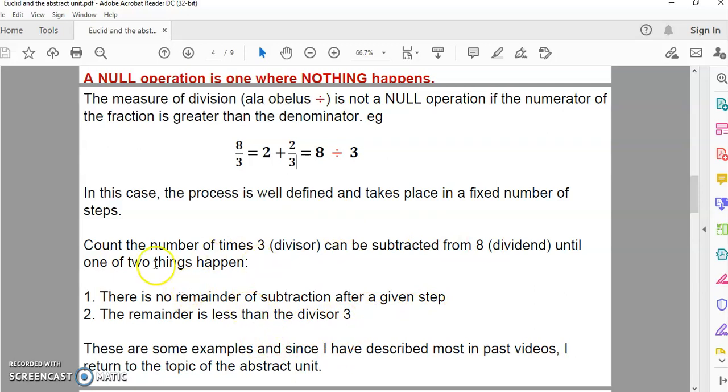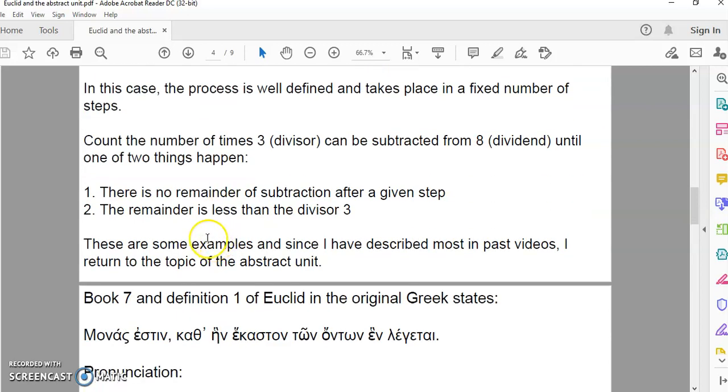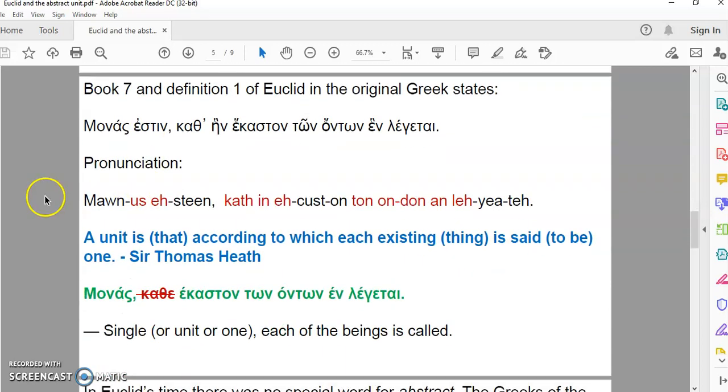The fools in mainstream academia, when they say that one divided by three is 0.333 dot dot dot, don't know what they're talking about. They don't understand measure, they don't understand radic systems. They are clueless and deserve to be called that because they're beyond correction.